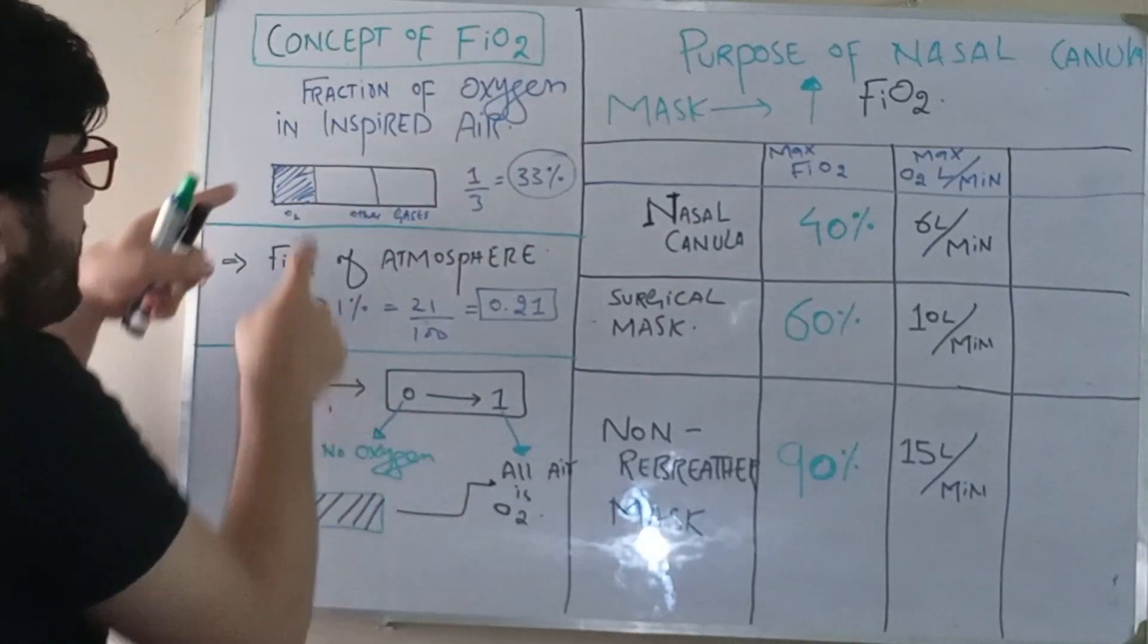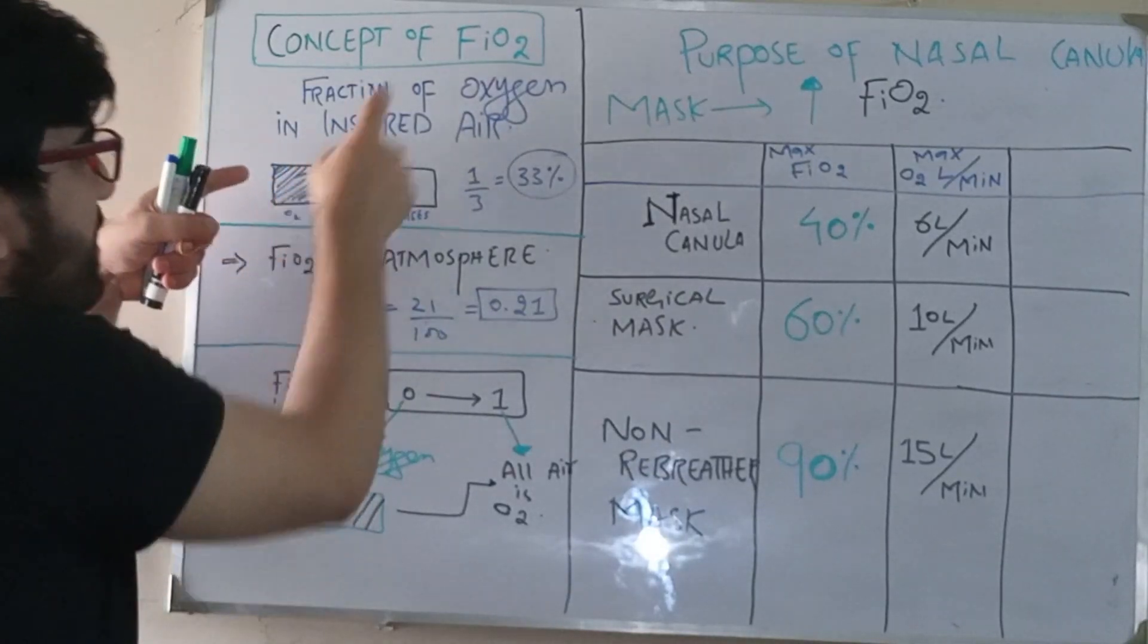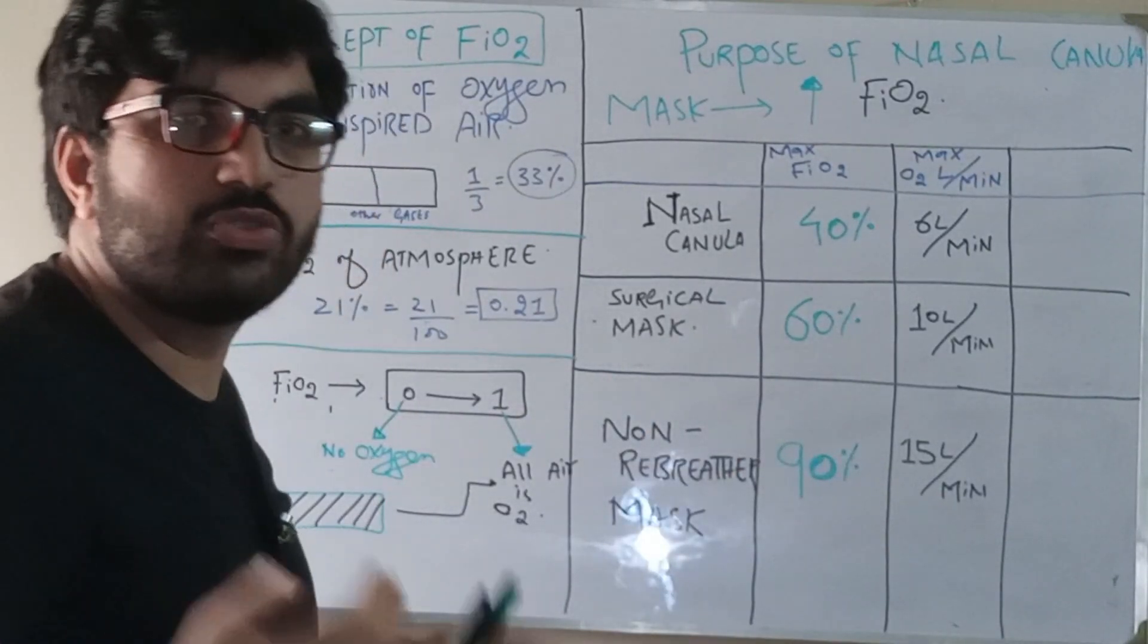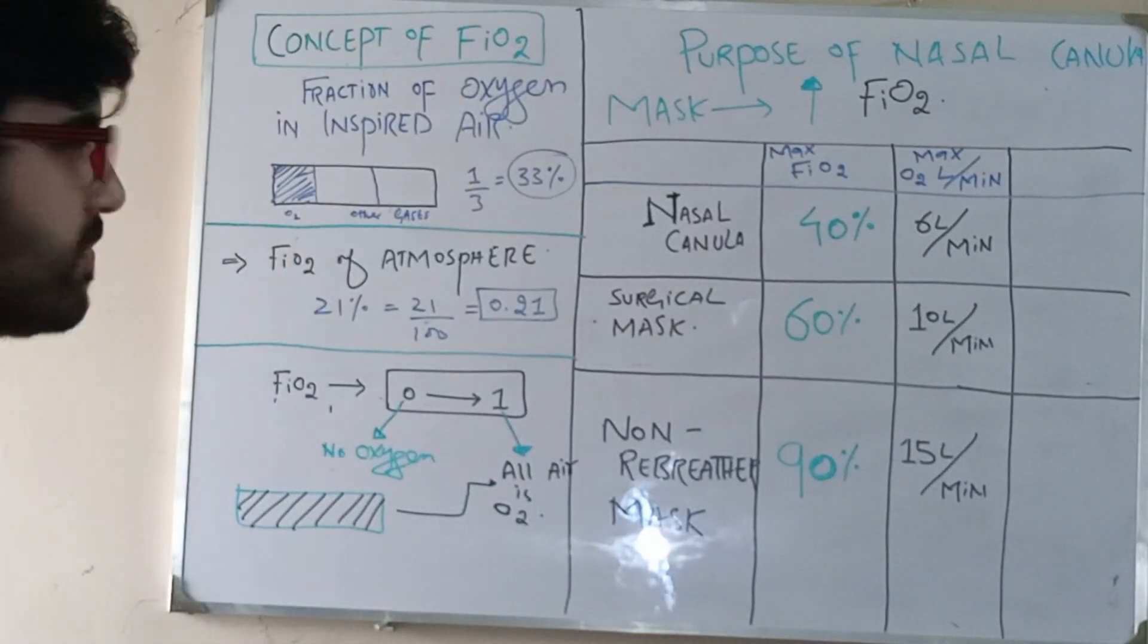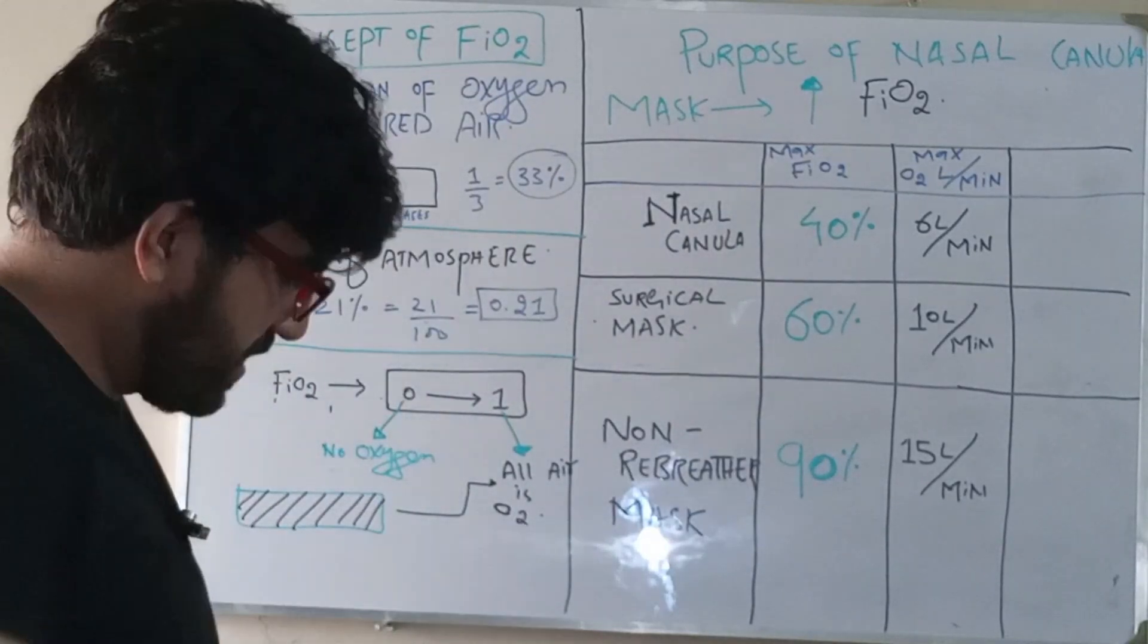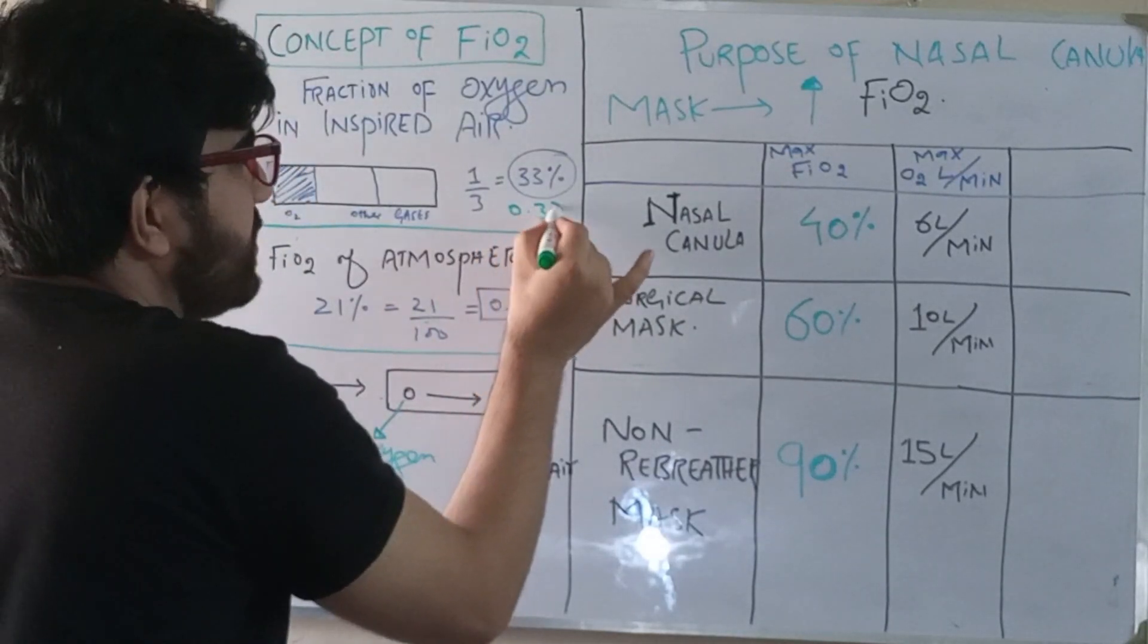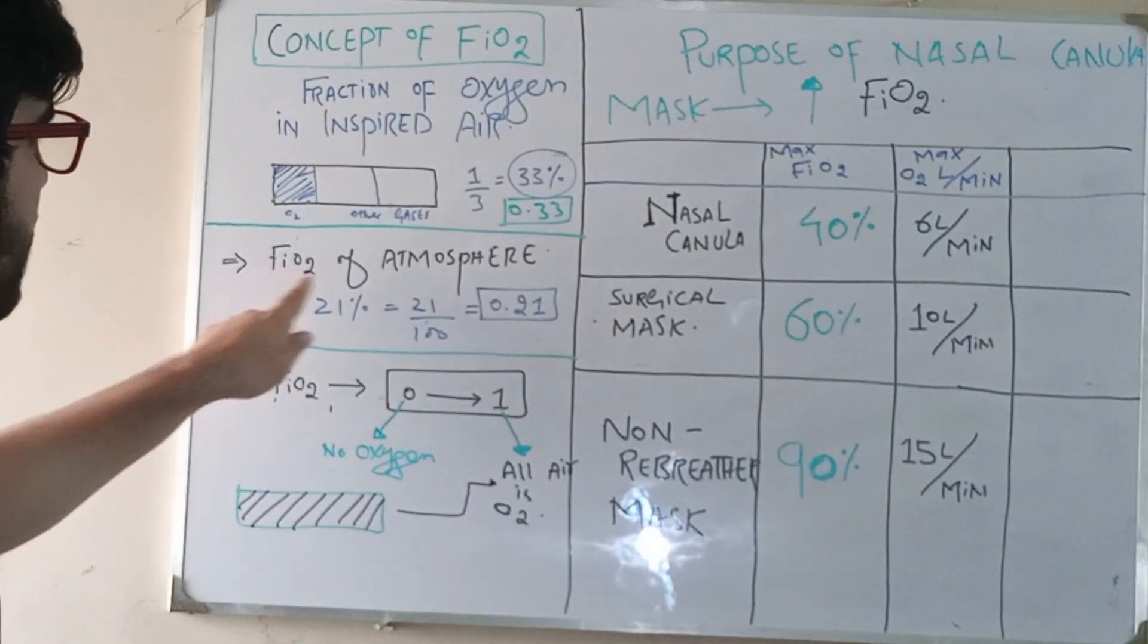If this is the oxygen present in the air, this is actually FiO2. If it occupies one-third of the total amount of air, then what is its FiO2? There is one by three, thirty-three percent, or 0.33. The FiO2 of atmospheric air, we know that in atmosphere the oxygen percentage is twenty-one percent.